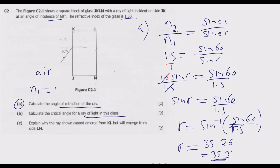Simplified, the critical angle is 41.88 degrees. This is the critical angle: the special angle of incidence such that when a normal is drawn, the refracted ray at the boundary is deflected at 90 degrees. That is the angle we are looking for.